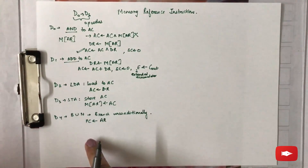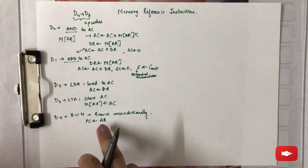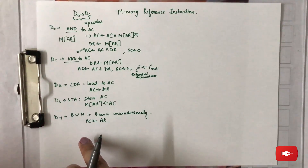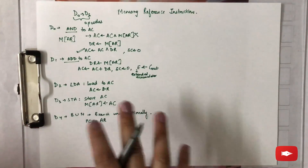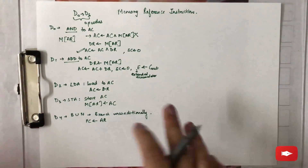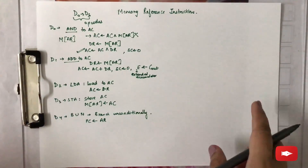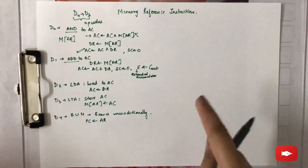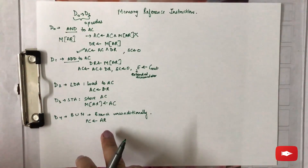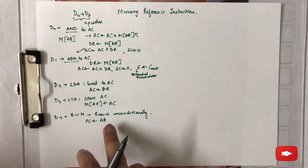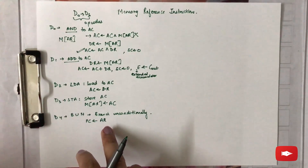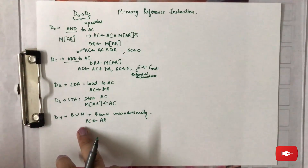In BUN, the effective address is transferred to the program counter. This basically allows the programmer to specify an instruction out of sequence, and the program jumps to that particular instruction. The address of the instruction to be executed next, without any condition, is transferred to PC.